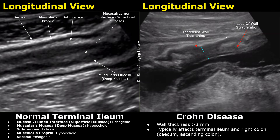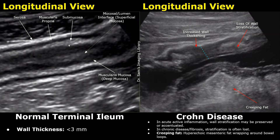The image on the right shows an ileum affected by Crohn's disease. In Crohn's disease, the bowel wall thickness will be greater than 3 mm. Usually the terminal ileum, the cecum, and ascending colon are affected. Wall stratification refers to the layered appearance of the bowel wall. Loss of wall stratification means we will not see the distinct layers. In acute cases, wall stratification may be preserved, but in chronic inflammation, as in this image, we see increased wall thickness and loss of wall stratification.